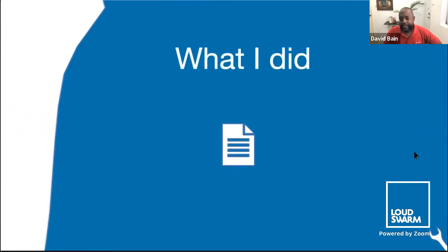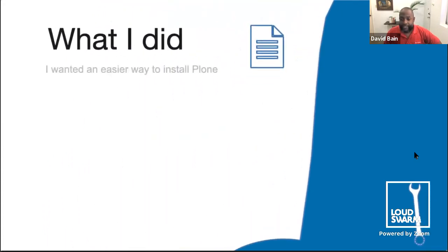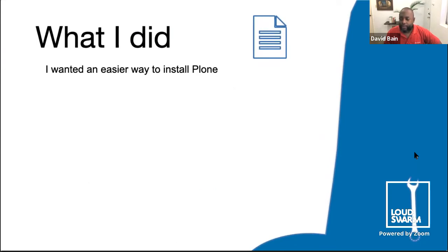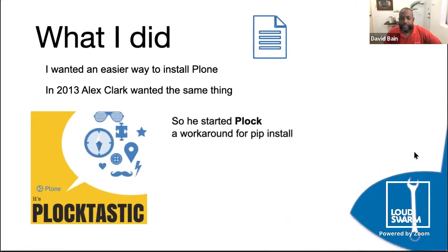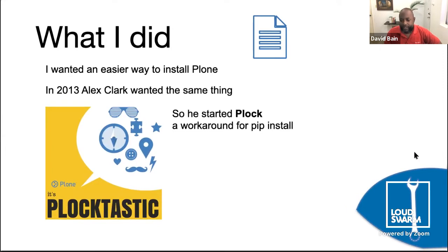Let's start with what I did to set some context. This is sometime in 2014 — not even a decade since the iPhone, and we're still communicating on IRC. I wanted an easier way to install Plone for development. It turns out that in 2013, Alex Clark wanted the same thing. He started a project called Plock, which eventually evolved into a workaround for people who might want to pip install Plone. It never got to the point where we are now — we can now pip install Plone — but it was a pretty good workaround at the time.